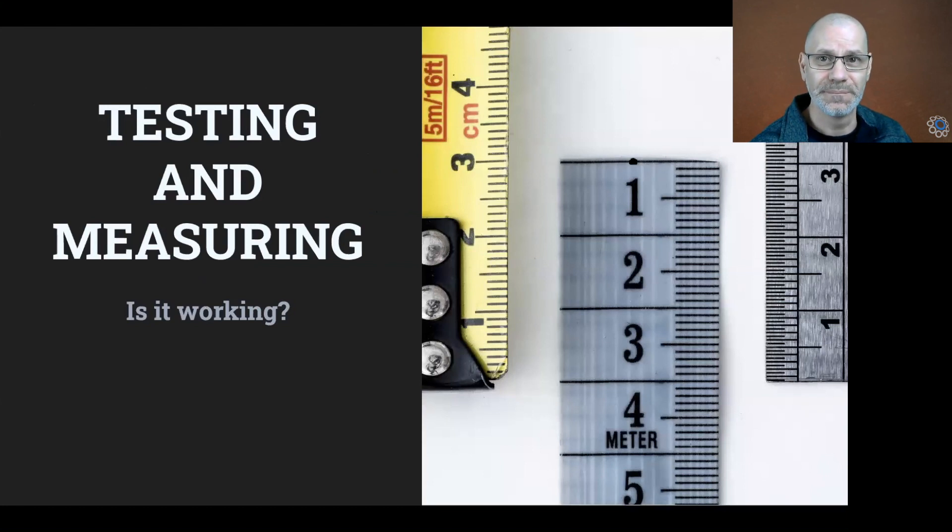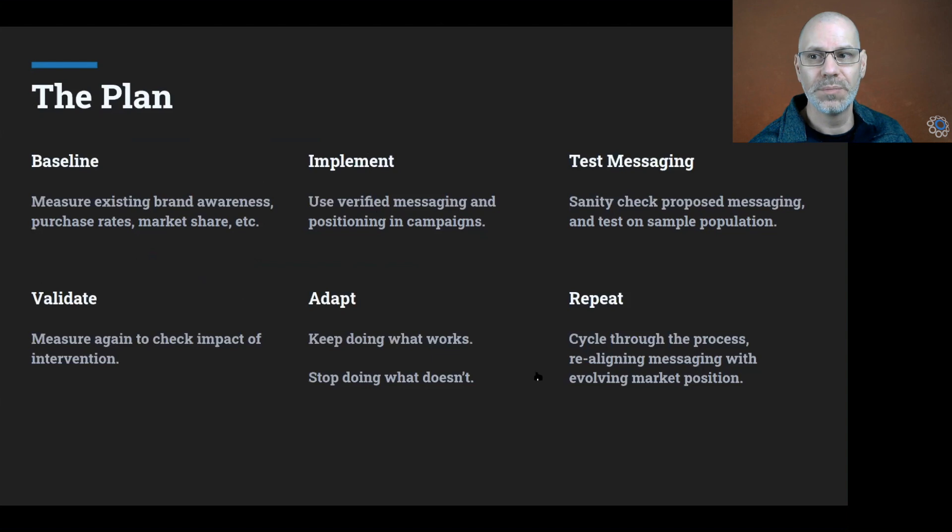The last thing is measuring things. Is it working? Don't just throw spaghetti at the wall and hope for the best. When you are designing your position, figure out how you'll know if you're wrong. And that's what this is all about. So have a plan and run through a process. This is a general structure of how we like to think about it. You need to baseline. You need to understand what you're doing right now because you're about to go and change things and you want to be able to figure out if what you changed worked. Did it hurt you or did it help you? If you haven't got a baseline, you don't know. So go and have a look at some way of measuring what is your current brand awareness? What do your purchase rates look like? Do you have any market share? Have a baseline. And then when you implement your campaign, track what you're actually doing, have a way that you can go and measure it.